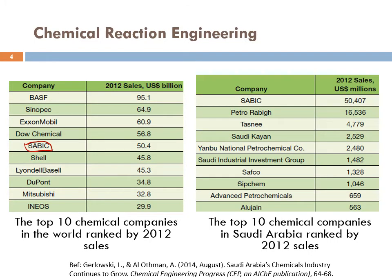Now let's look at the top 10 chemical companies in Saudi Arabia, ranked by 2012 sales. The first company is SABIC, with total sales of 50,407 million US dollars. Then comes Petro-Rabakh, Tasniya, Saudi Kayan, and so on.